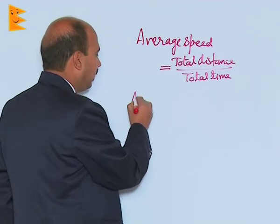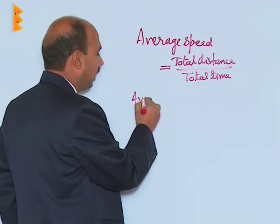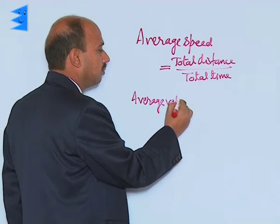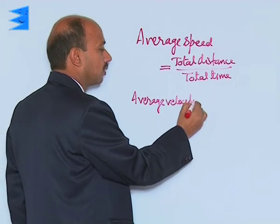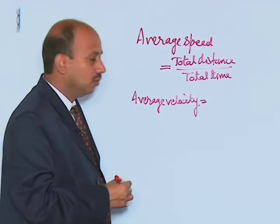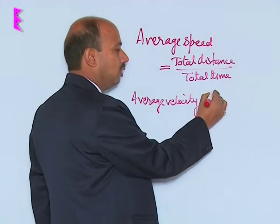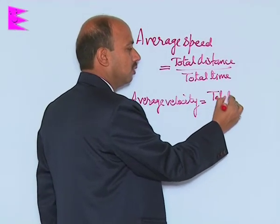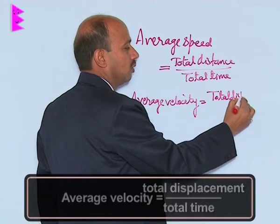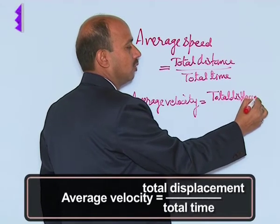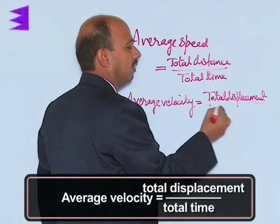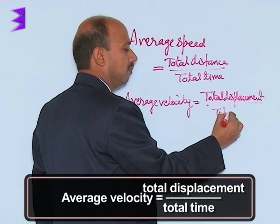Similarly, you can define average velocity. Average velocity is equal to total displacement divided by total time.